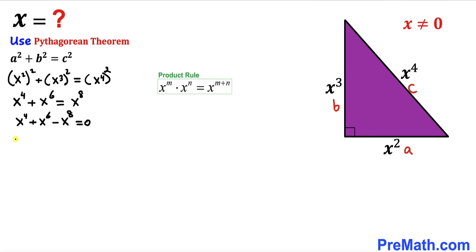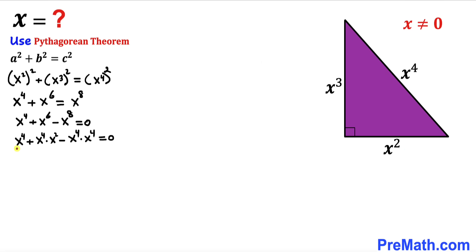So this equation becomes x⁴ + (x⁴ × x²) − (x⁴ × x⁴) = 0. We can see that x⁴ is common among all terms, so let's factor x⁴ outside. We end up with x⁴(1 + x² − x⁴) = 0.